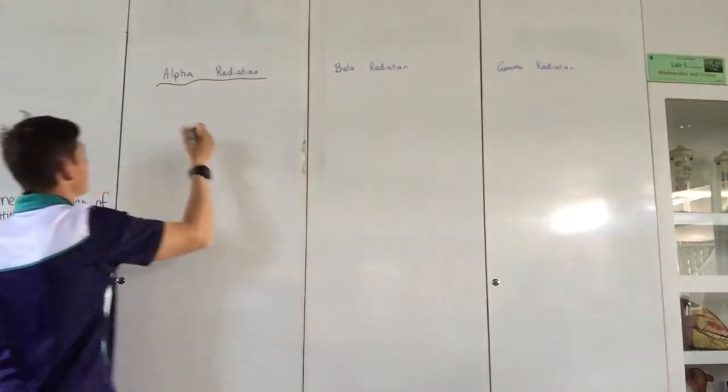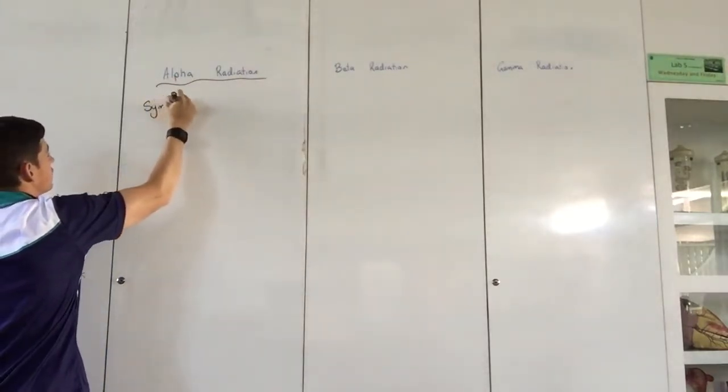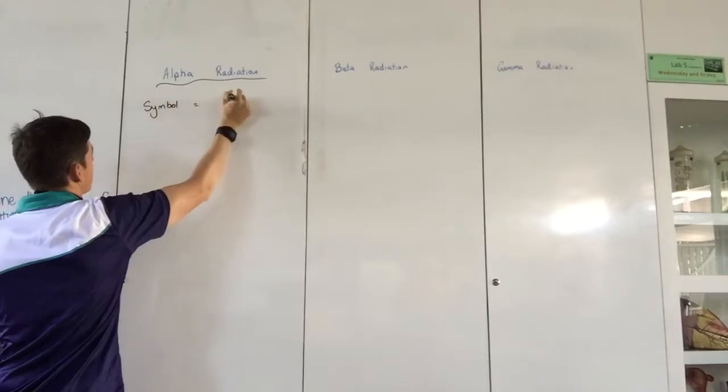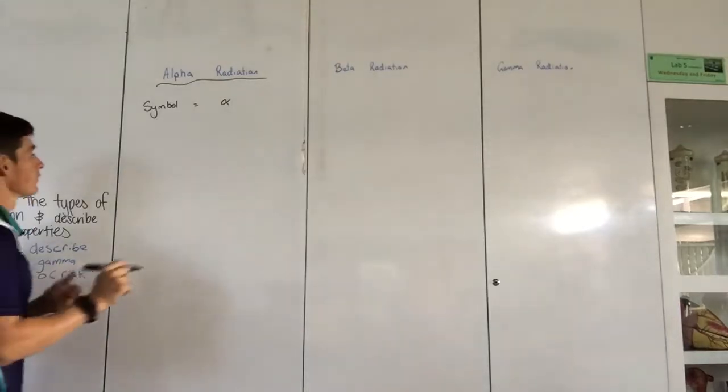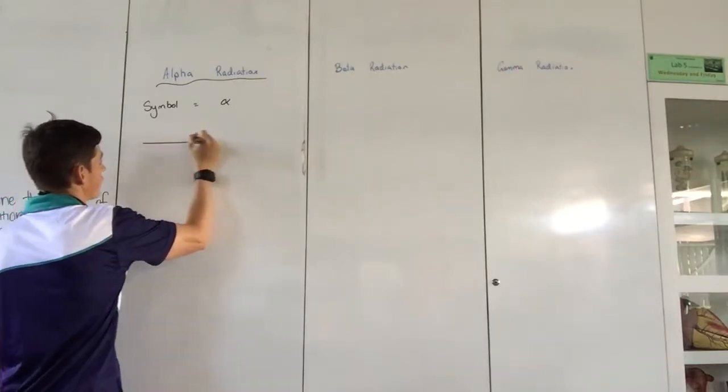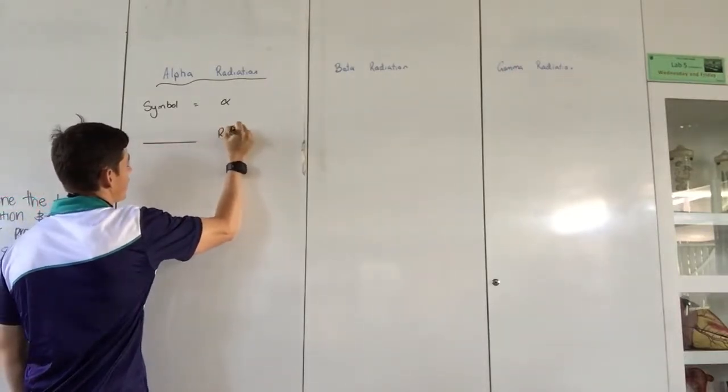So alpha radiation, the symbol for alpha radiation is alpha, which is kind of like a fish without the tail. It's the Greek letter for alpha. Now I'm going to leave this blank, but it is something radiation.